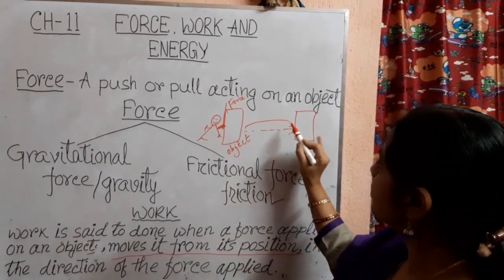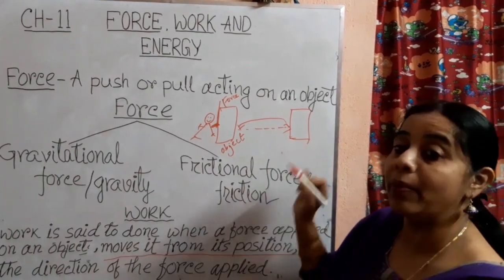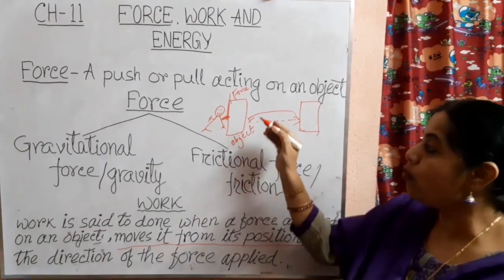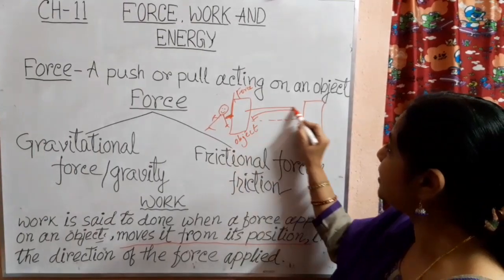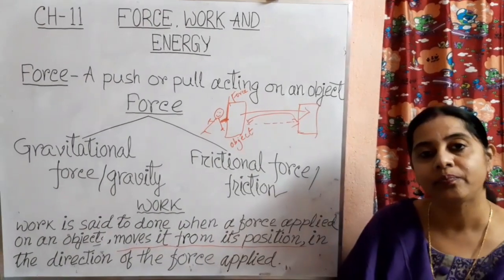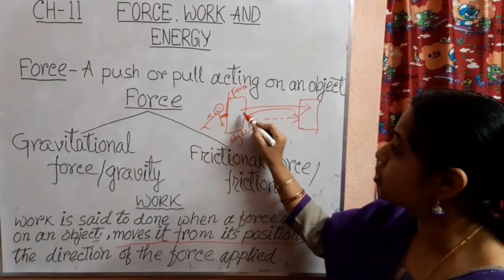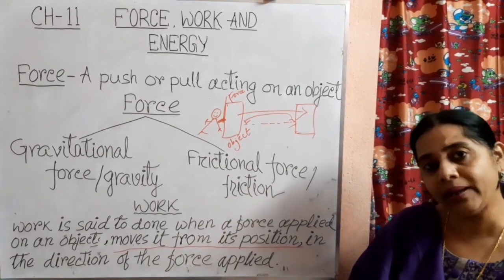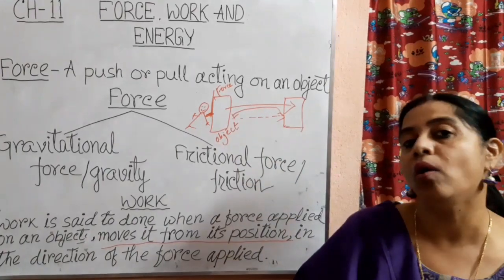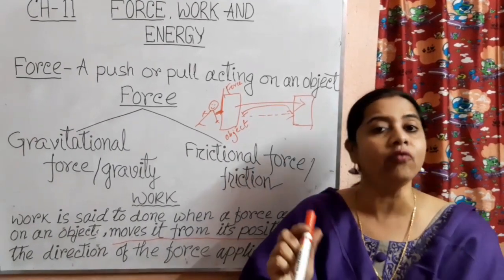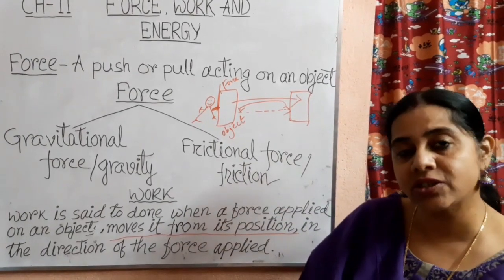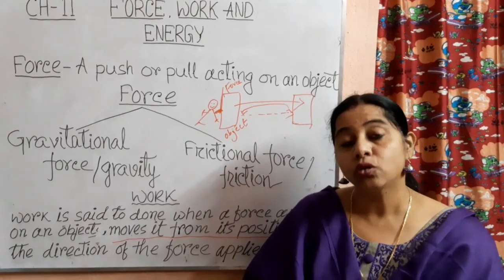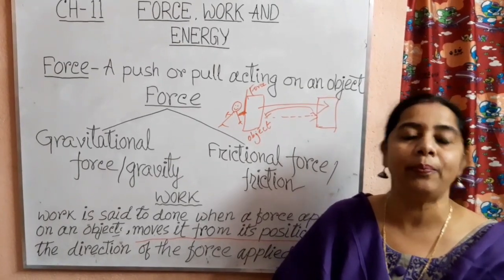This is the distance covered by this object. When you apply force towards this direction, the object moves towards that direction — not the other direction. So children, work is said to be done only when you apply force on an object and the object starts moving from its original position towards the direction in which you apply the force.